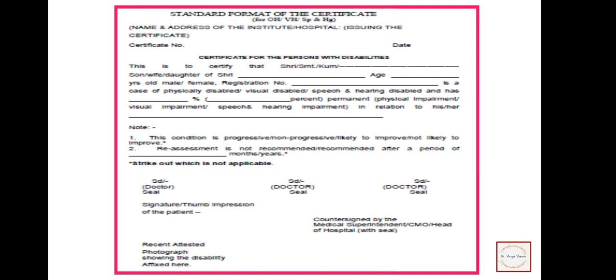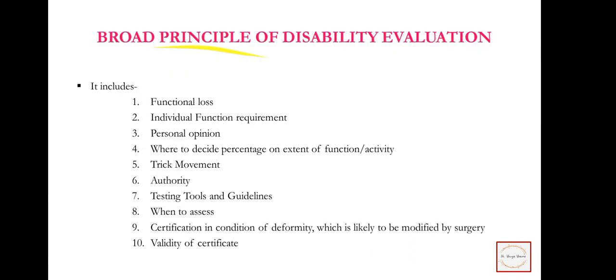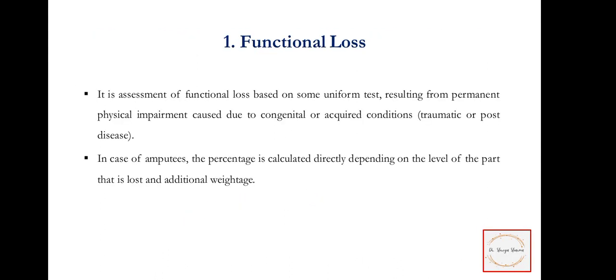This is how the standard format for the certificate looks. If we look at disability evaluation, there are 10 broad principles. The first is functional loss — it is assessment of functional loss based on some uniform test resulting from permanent physical impairment caused due to congenital or acquired condition.